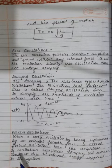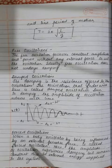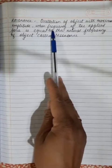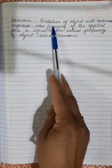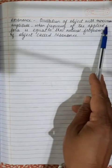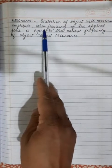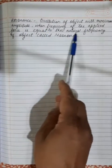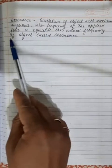Next are forced oscillations. When a body oscillates under the influence of an external periodic force, it is called forced oscillation. Here the amplitude of oscillation experiences damping but remains constant due to external energy supplied to the system. Resonance is the condition when the frequency of the applied force equals the natural frequency of the object, resulting in oscillation with maximum amplitude.